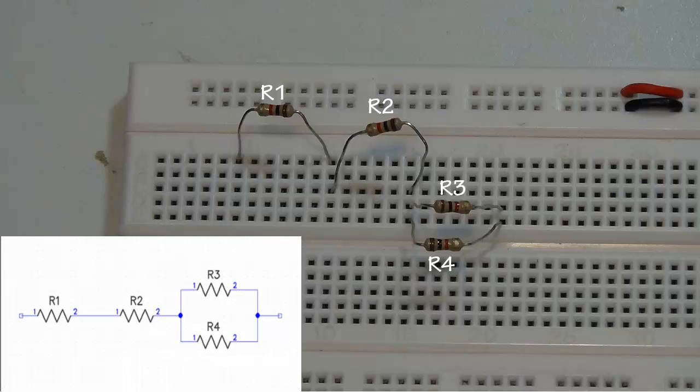The parallel combination of R3 and R4 is connected in series with R2 and R1. When building the circuit on the project board I basically build the circuit much the same way as I see it on the circuit diagram.